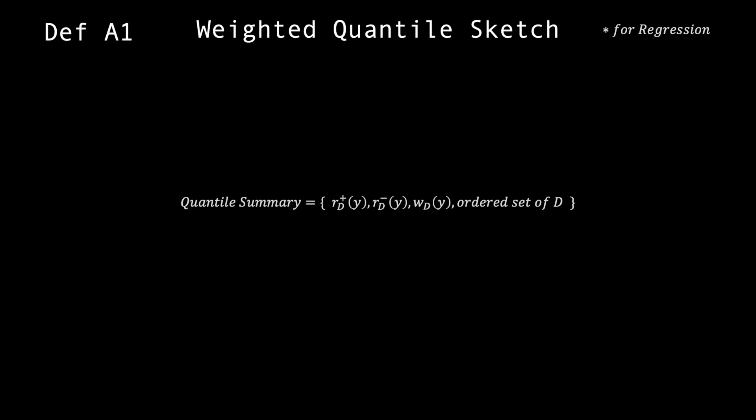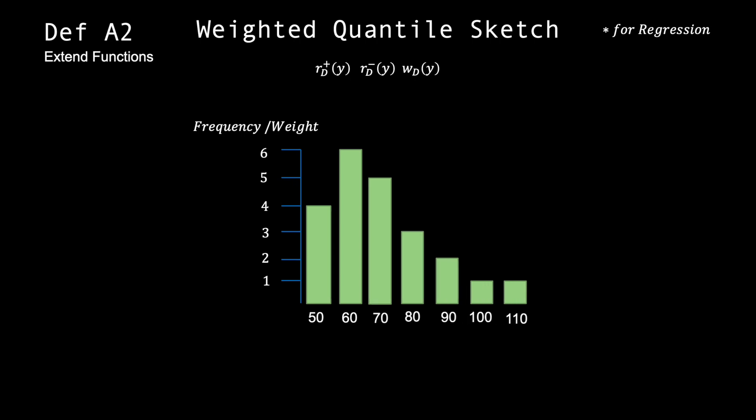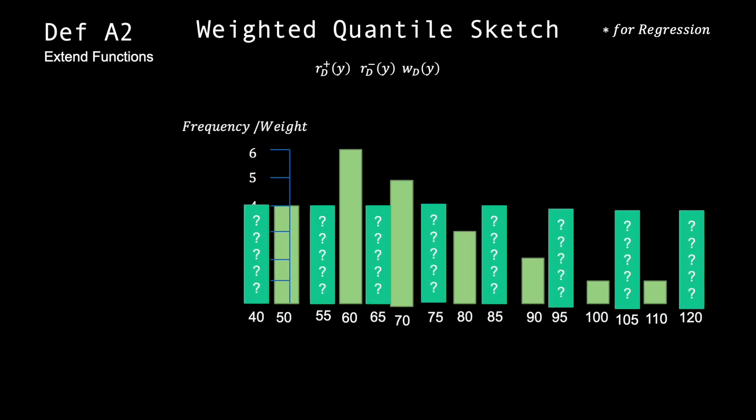A quantile summary is a collection of these three functions in addition to the ordered dataset itself. The point of a quantile summary is to answer queries regarding where an input ranks in the dataset. These functions are perfect at outputting the rank of a data point that belonged to the original dataset they were derived from. But they need to be extended to rank data points outside of D.